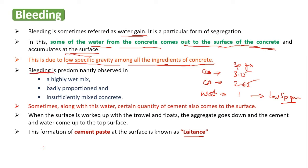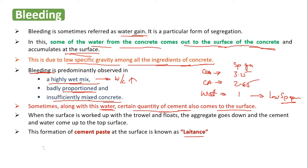Bleeding is mostly seen in highly wet mixes — when a high water-to-cement ratio is adopted — badly proportioned mixes, and insufficiently mixed concrete. Sometimes, along with water, a certain quantity of cement also comes to the surface. When the surface is worked up with trowels and floats, the aggregate goes down and the cement and water come to the top surface.